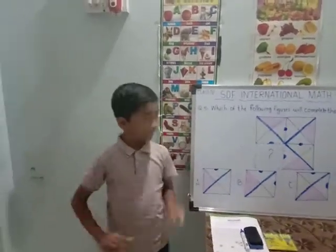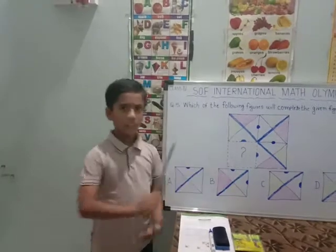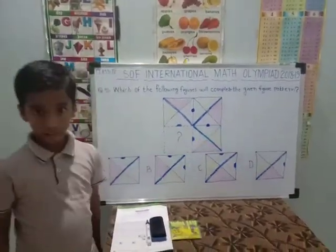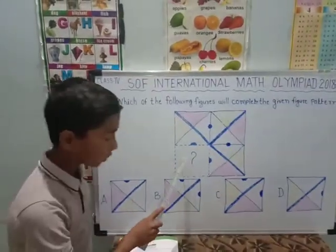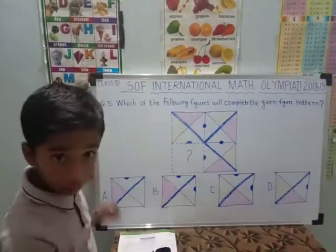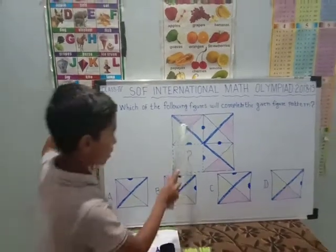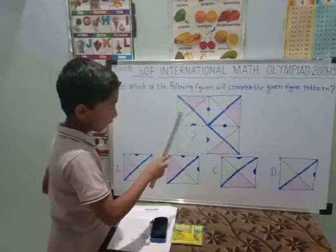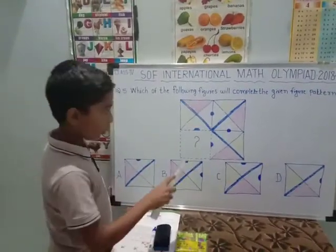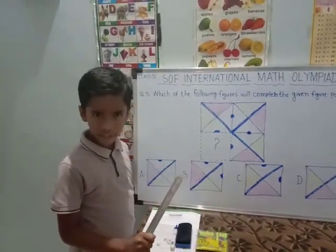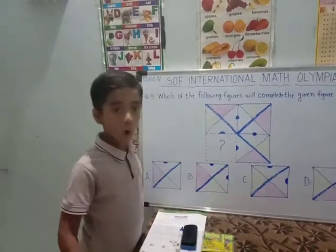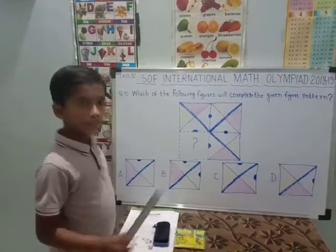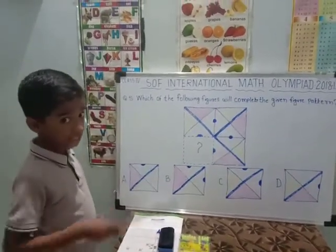The next question is: which of the following figures will complete the given figure pattern? They ask us what will be embedded here. Now we will see the sequence first. Here it is pink, here it is yellow, here it is yellow, here it is pink. The same sequence would continue. Here it is yellow, then here it would be pink, here it is pink, here it is yellow.